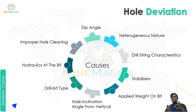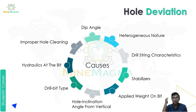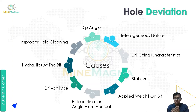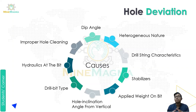Other causes of hole deviation include drill string characteristics, stabilizers, and applied weight on bit (WOB). Putting a weight on the bit that is unsuitable can cause hole deviation. Hole inclination angle from vertical and drill bit type also matter — using an improper drill bit for the surface or job can cause deviation.